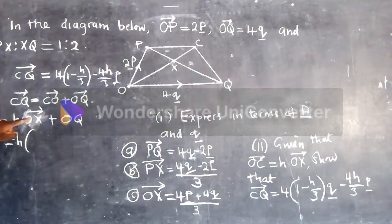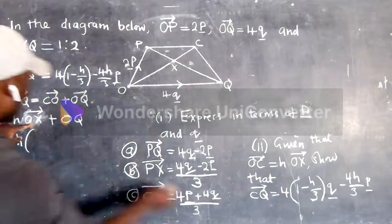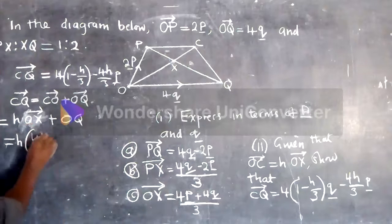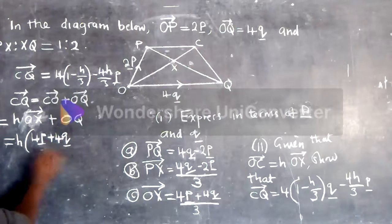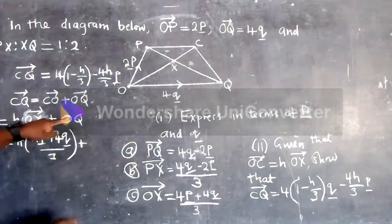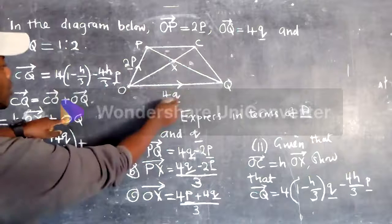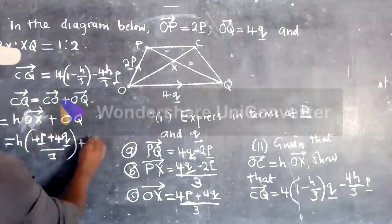What is our OX? We have OX, it's over here. We just found OX in the previous part. So this is our OX over 3, plus OQ. We have OQ.